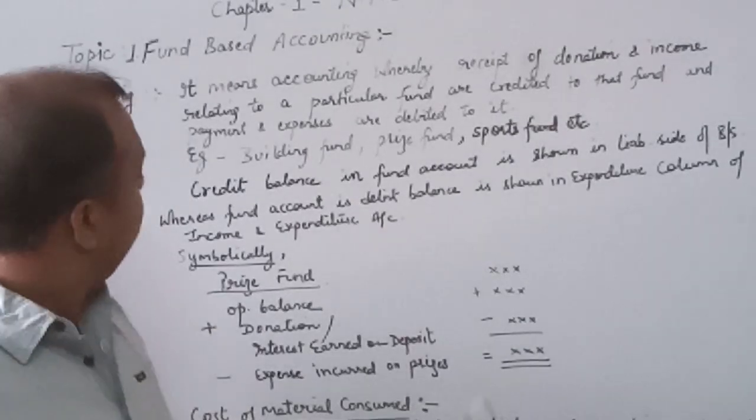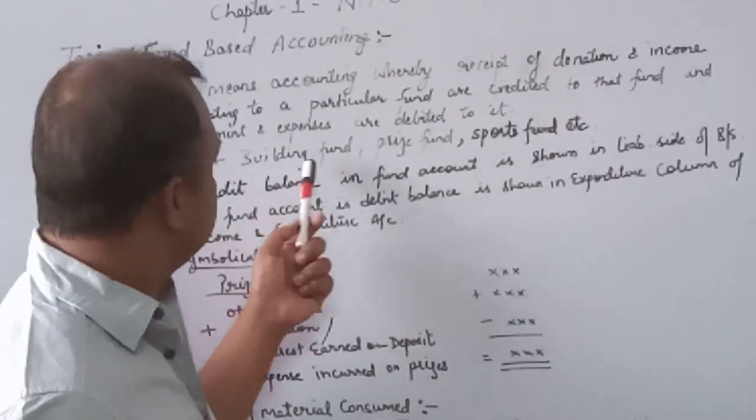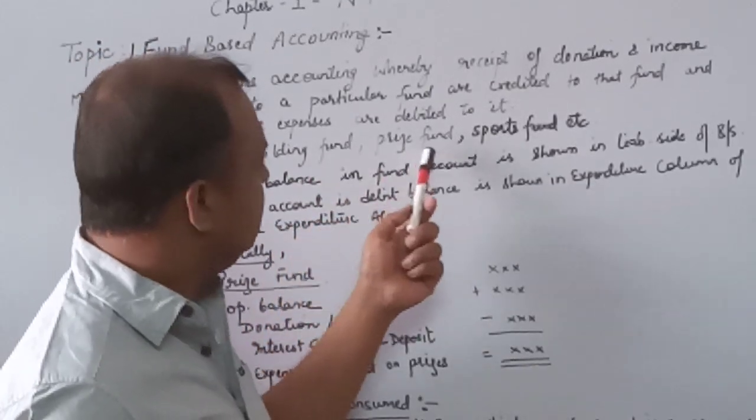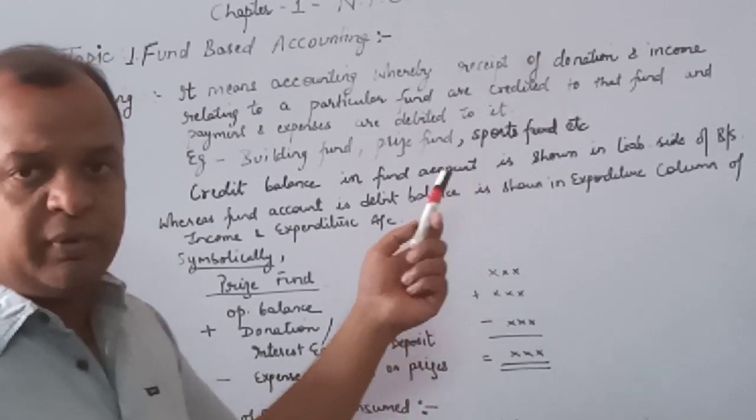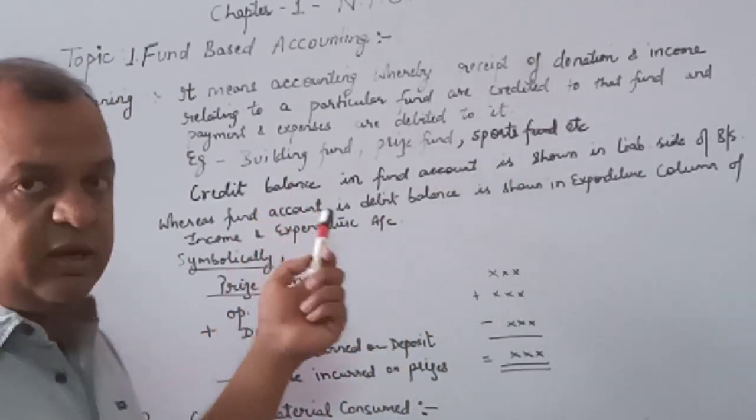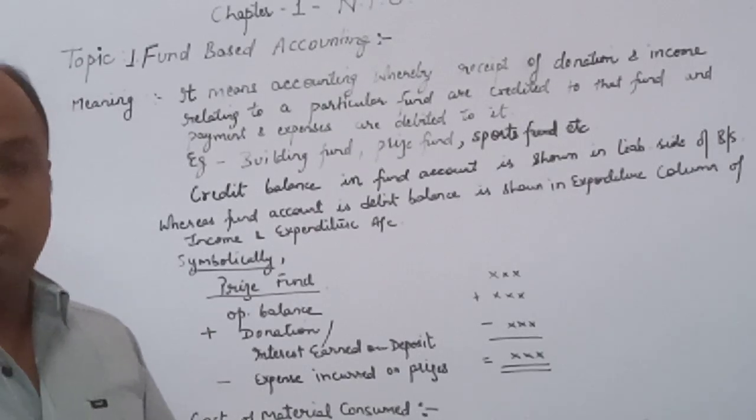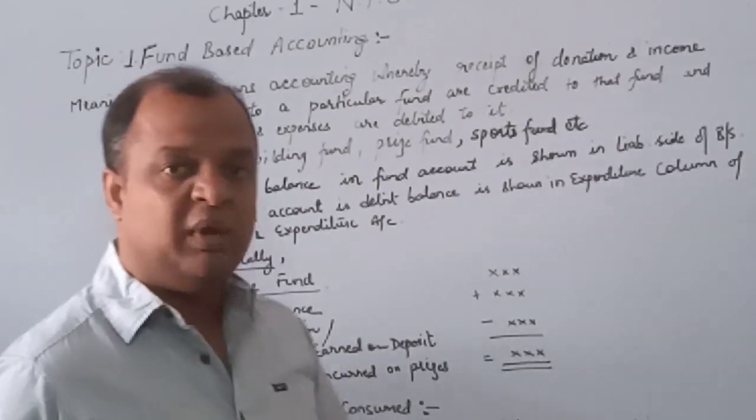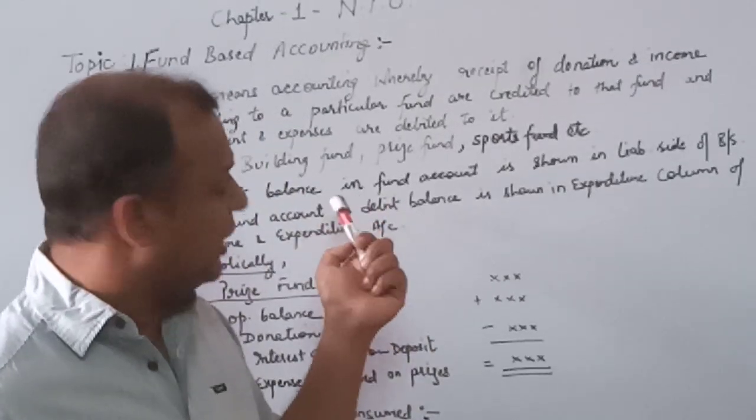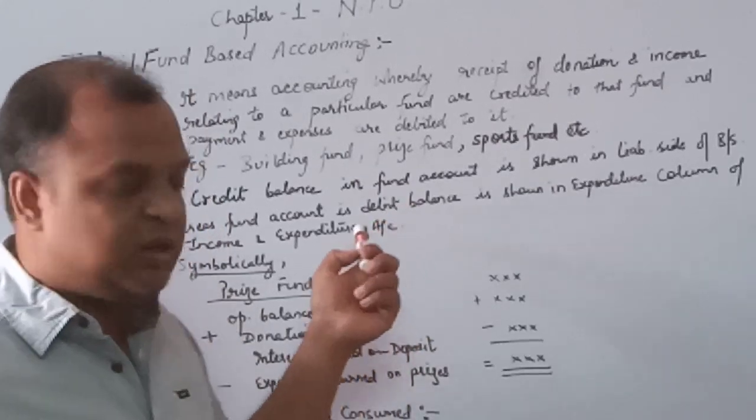Further, a few examples of fund based accounting are building fund, prize fund, sports fund, etc. If a building fund is created, any money collected in that building fund will be utilized for the construction or making of building, and any amount spent will be subtracted from that building fund.